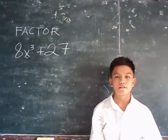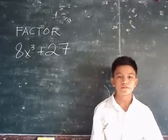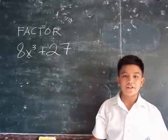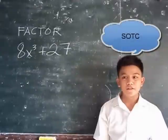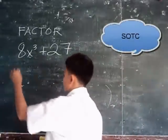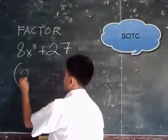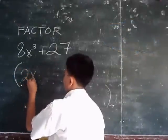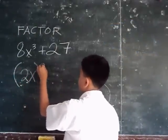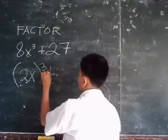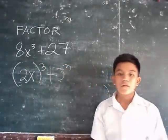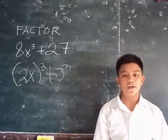Factor 8x³ plus 27. To factor this, write it in the form of sum of two cubes, then determine the factors.